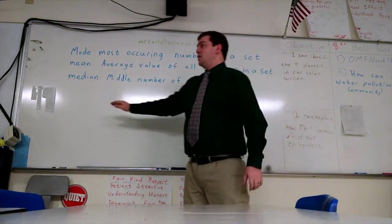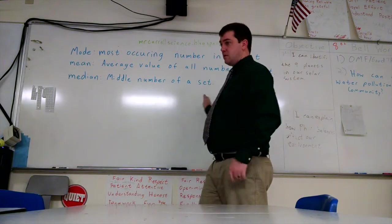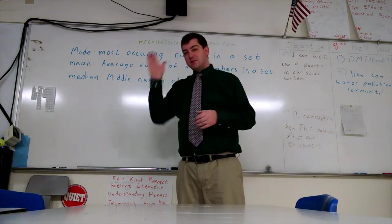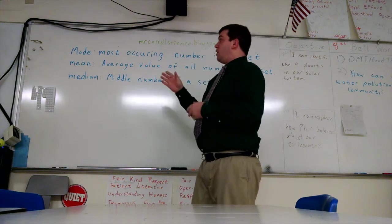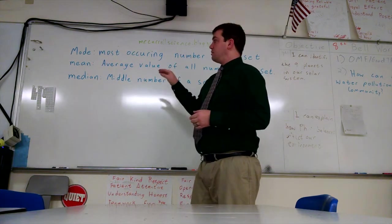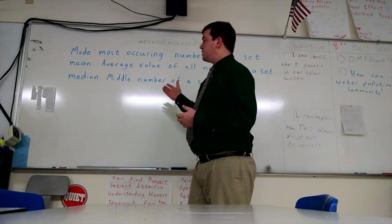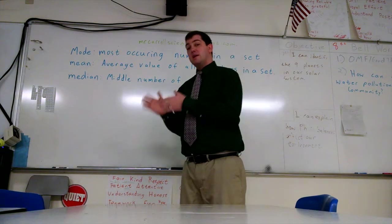And then the median, if you take all your numbers from least to greatest, whatever number is right in the center is the median. So mode is the most occurring, mean is the average, median is the one right in the middle.